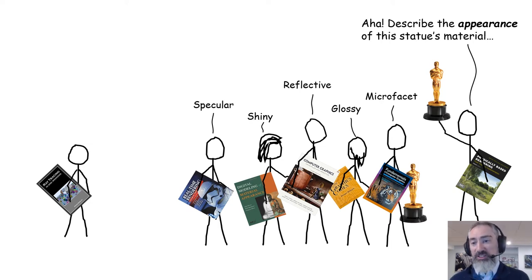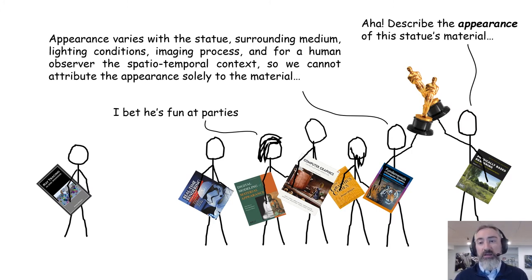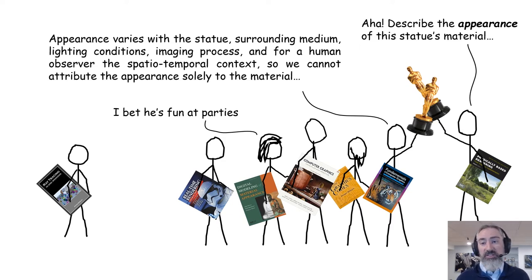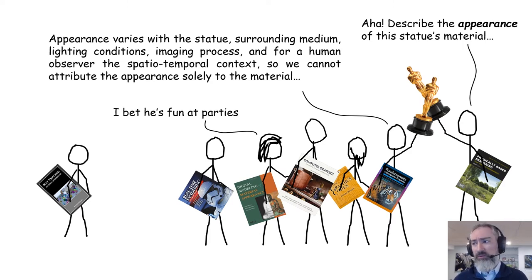Furthermore, we recognize that we really can't discuss appearance as a property of an object anyway, because the passive appearance of an object results from many factors: the combination of the two media on either side of the surface where light is scattering; the incident illumination conditions; the imaging system's sensitivities, such as a camera sensor or human retina; and the context within the image — things like light adaptation, bloom, and local contrast within space and time. All those happen in the human visual system and in modern cameras as well. And when I say passive appearance, I just mean the object isn't emitting light itself.